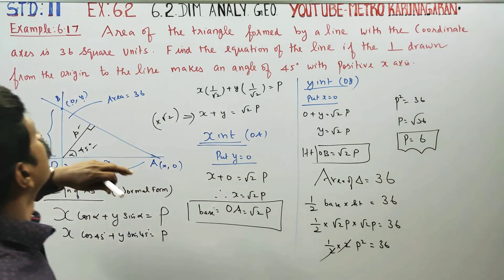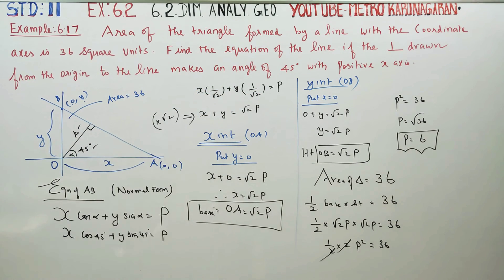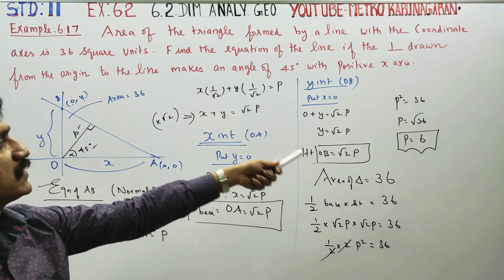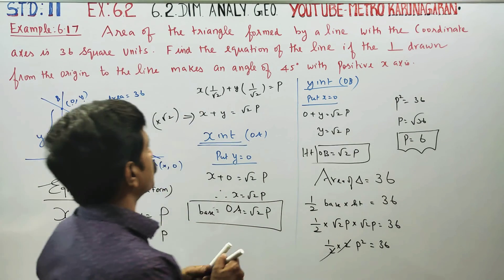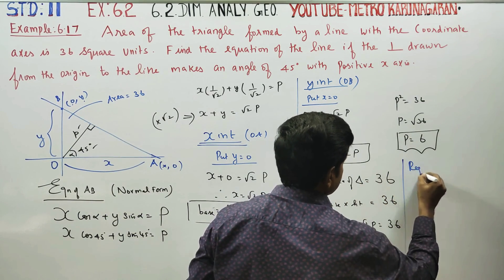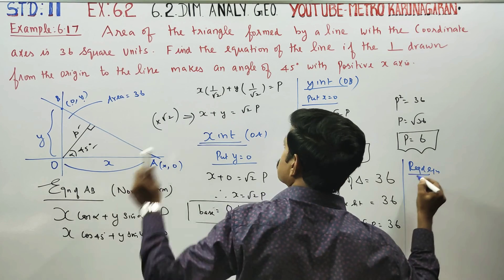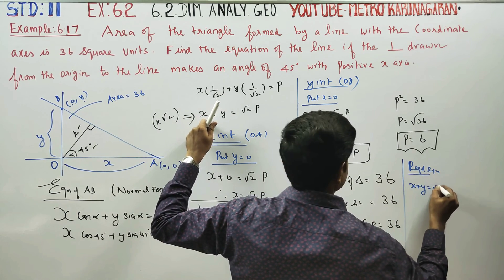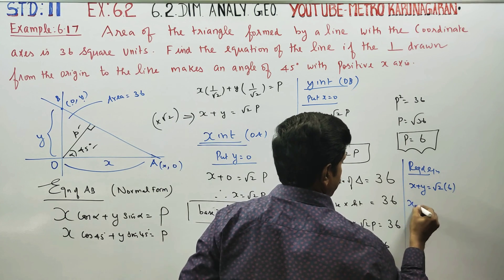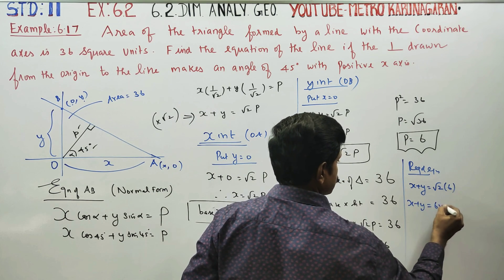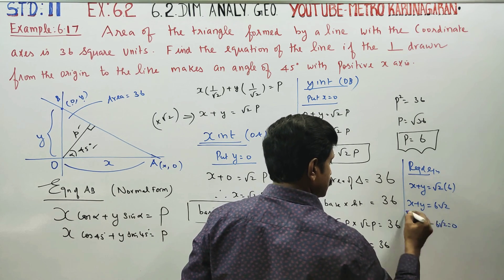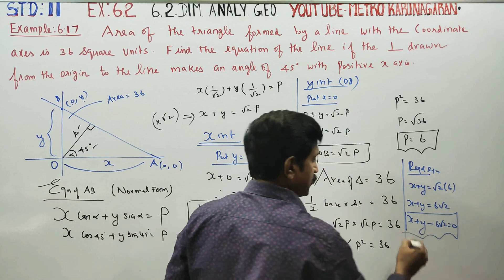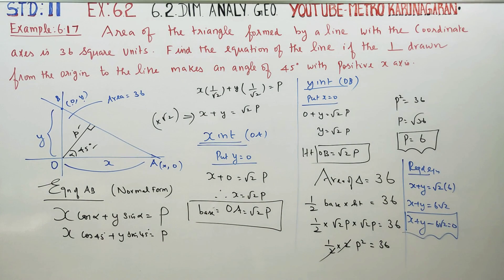Now find the equation of the line. The main answer: x + y = √2 × 6, so x + y = 6√2. Therefore x + y − 6√2 = 0 is the required equation of the straight line.